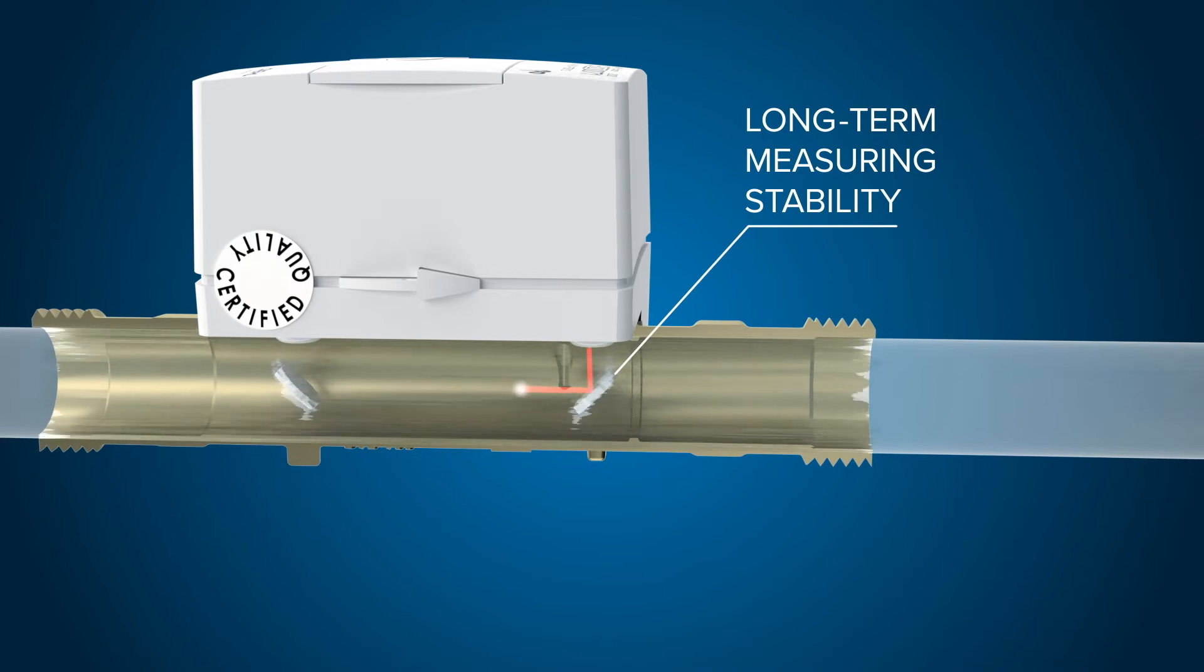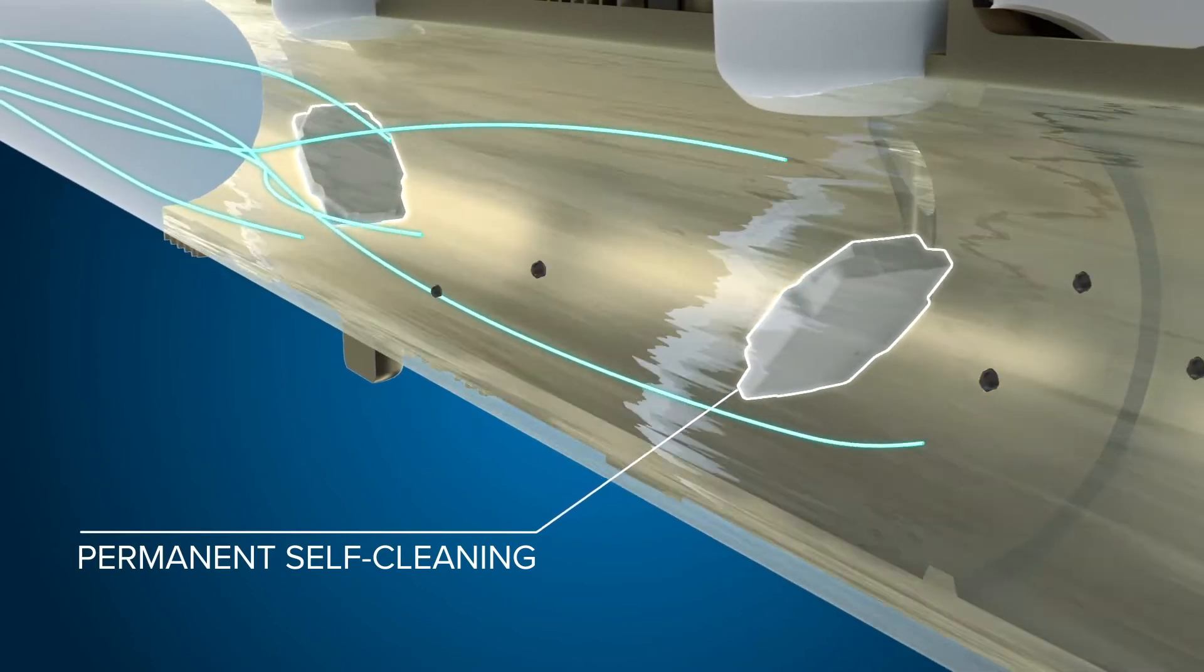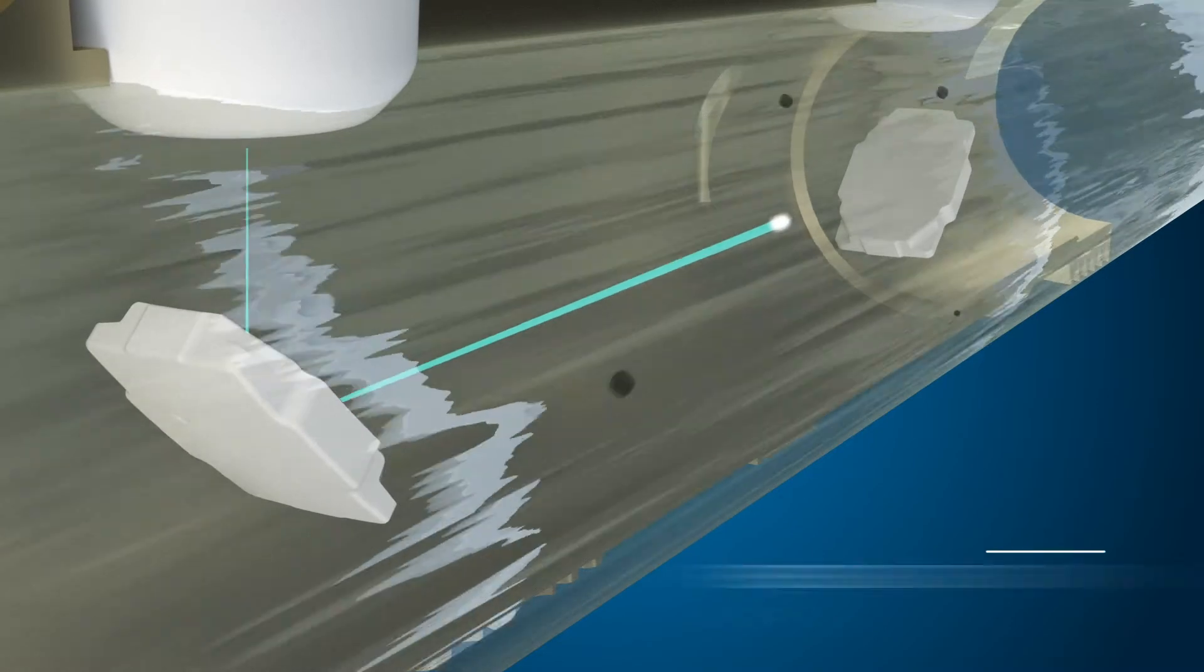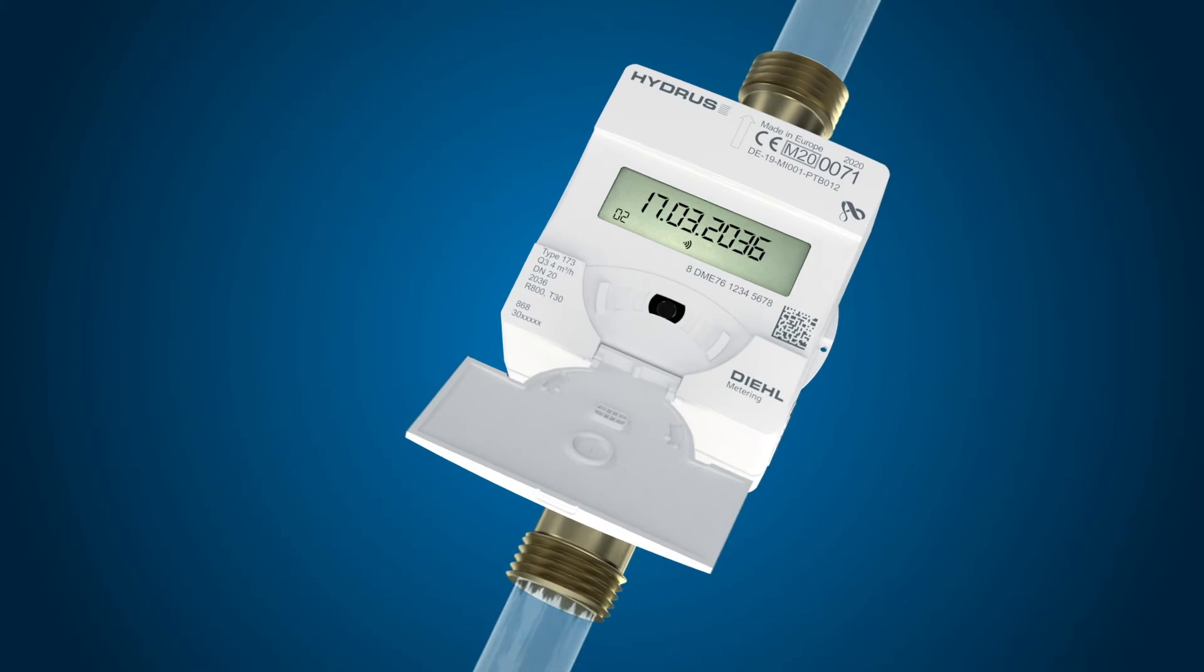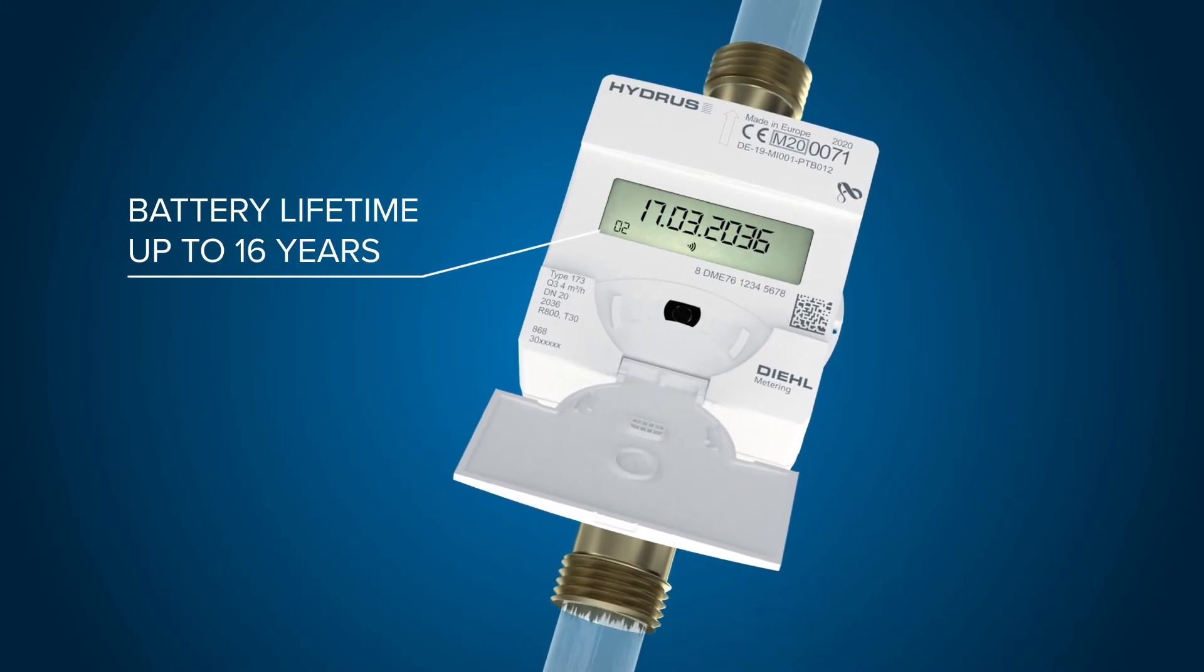Get the most out of your investment and benefit from long-term measuring stability. With permanent self-cleaning due to the flow dynamic design of the ultrasonic reflectors, Hydrus II allows for robust measurement even in case of particles and deposits, supported by an energy efficient battery with up to 16 years lifetime.